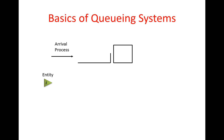We have an arrival process which is a stochastic process — for example, inter-arrival times can be exponentially distributed or follow any other distribution. The queue has a capacity, which you can think of as the capacity of a room where the line is formed, or the area in front of a cash register. The queue also has a discipline, or queue rule. Common rules include first-in-first-out, shortest processing time, or other queuing rules.